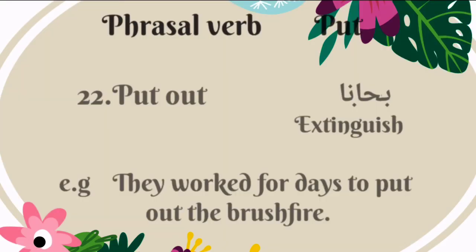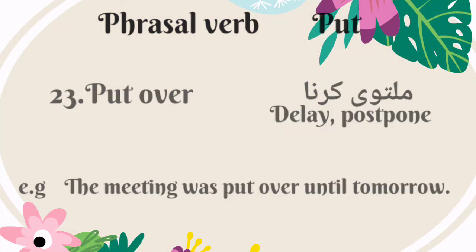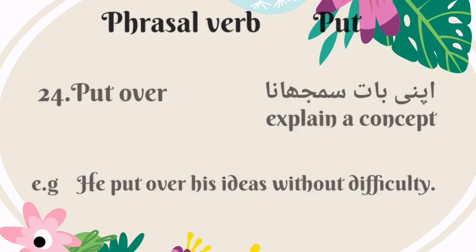The twenty-second phrasal verb of put is 'put out.' It means to extinguish — Urdu mein is ka matlab hai bujana. For example: they worked for days to put out the brush fire. The twenty-third phrasal verb is 'put over.' It means to delay or postpone — Urdu mein is ka matlab hoga multavi karna. For example: the meeting was put over until tomorrow. The twenty-fourth phrasal verb is also 'put over,' meaning to explain a concept — Urdu mein is ka matlab hai apni baat samjhana. For example: he put over his ideas without difficulty.